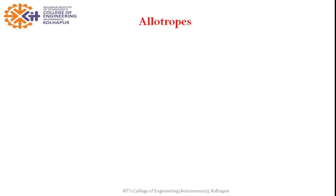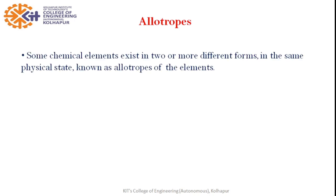Before going to carbon nanotubes we must know allotropes. Allotropes means certain elements that exist in nature in different forms in the same physical state. The same physical state is very important — matter exists in three states: solid, liquid, and gas. In one state, for example solid, the same element can have different structures, and those we call allotropes.